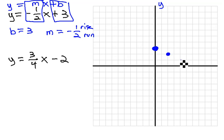And we could keep rising negative 1, run 2, all the way off the graph. We could even go the other direction, keeping that same rise run pattern. And that gives us our line for the first equation.